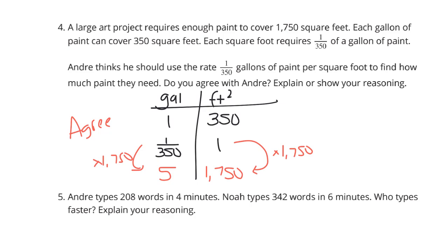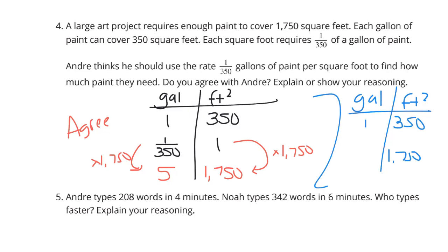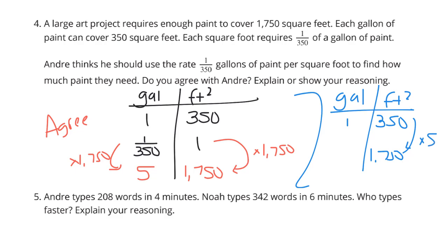There's also an argument on the disagree side. You could say you don't want to use the fraction 1/350th and prefer a different approach. Instead, you could take 1,750 divided by 350 to get 5, then multiply 1 gallon by 5 to get 5 gallons. So you could disagree with Andre because you prefer using the 1-gallon-per-350-square-feet unit rate instead.